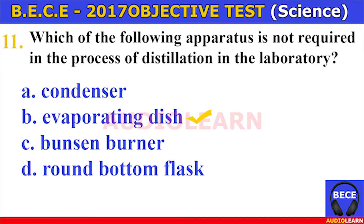Number ten. An example of a source of energy which is non-renewable is A. Petroleum, B. Solar, C. Tide, D. Wind. The answer is A. Petroleum. An example of a source of energy which is non-renewable is petroleum.